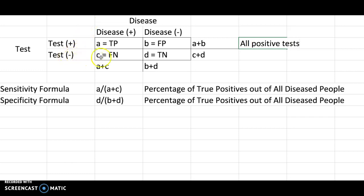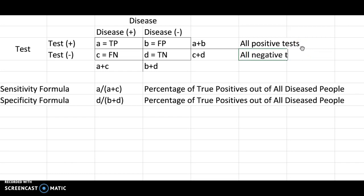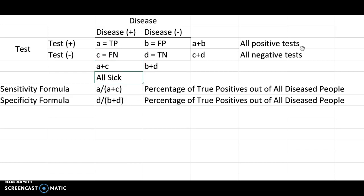Going horizontally down here, you have all test negatives, regardless of whether or not they have the disease — so this is all negative tests. Whereas going down vertically, a plus c is all sick regardless of test result, and b plus d is all well, or people that do not have the disease.